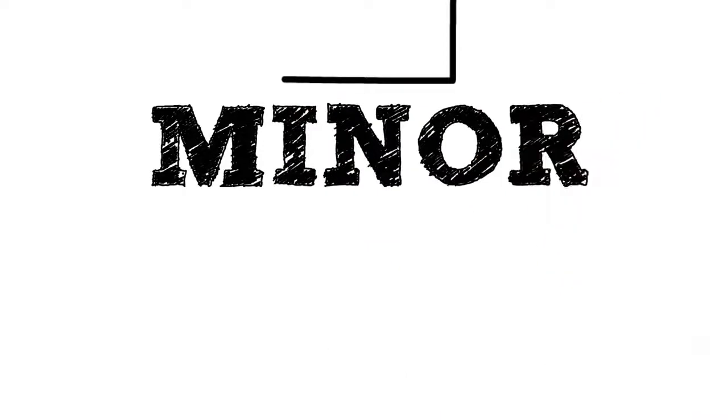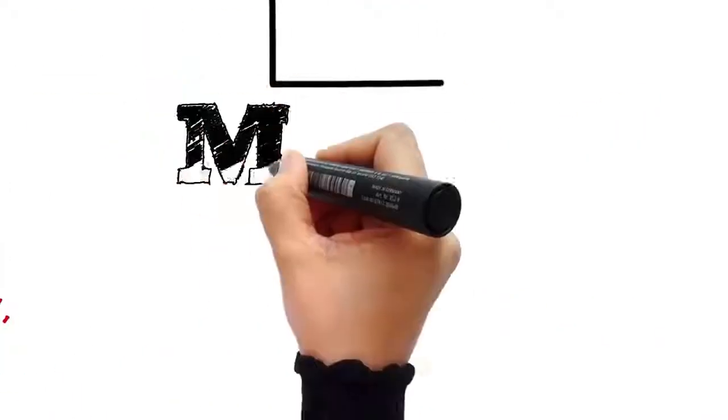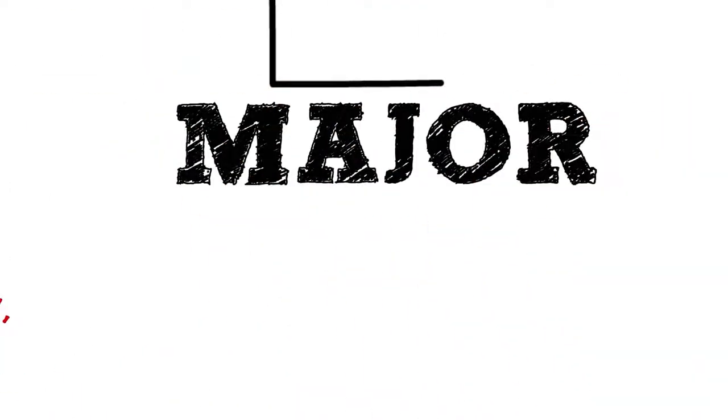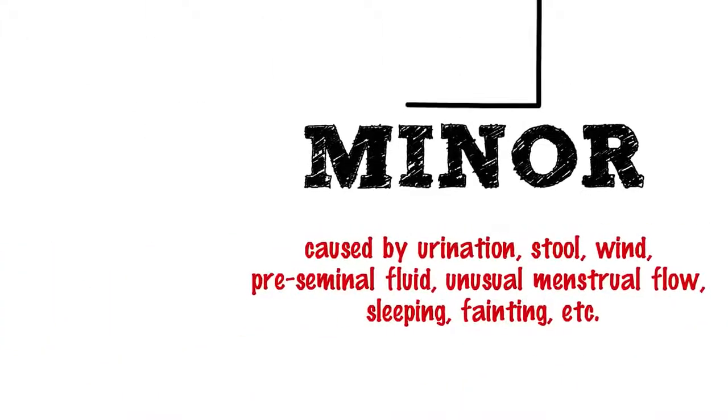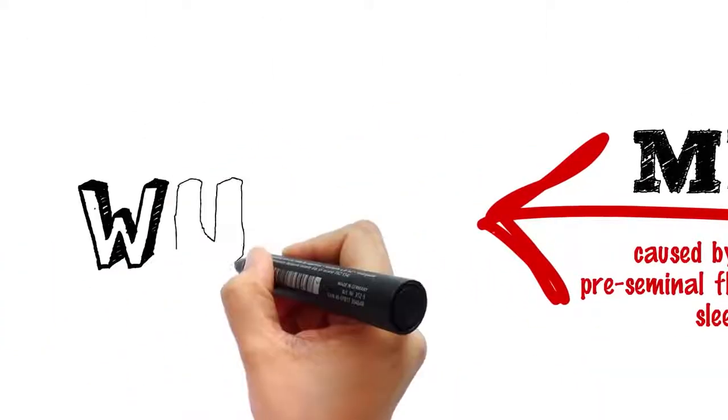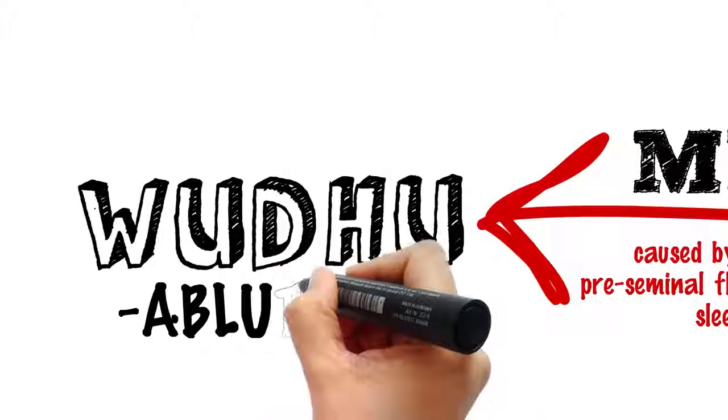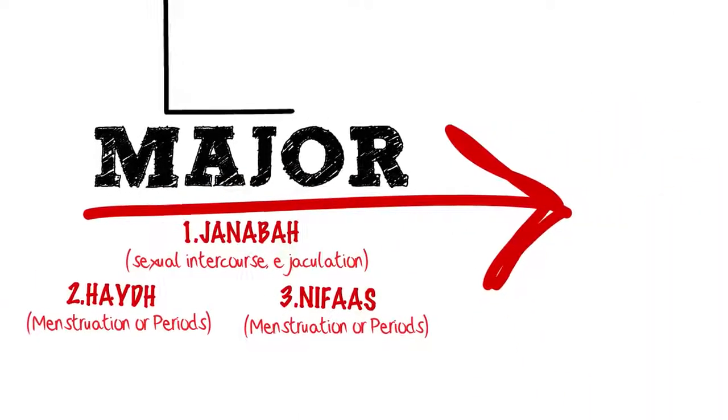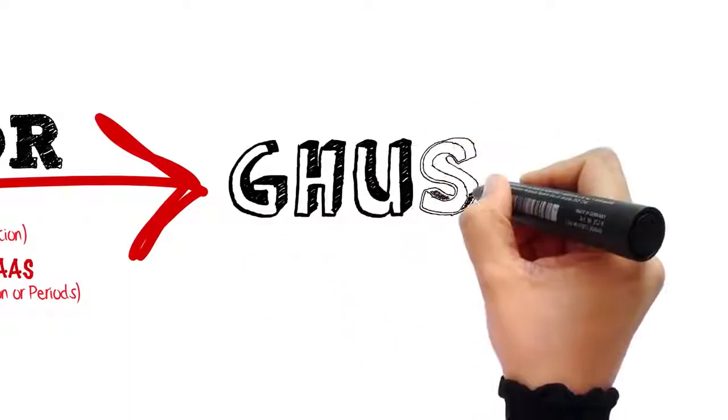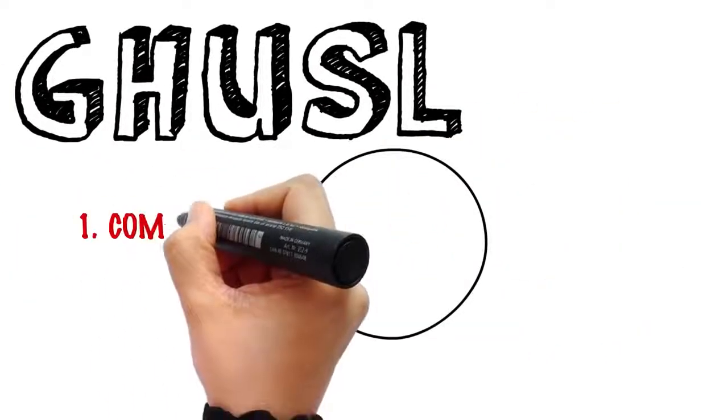So let's begin. There are two kinds of ritual impurities: the minor impurity and the major impurity, which occurs as a result of Janabah, Haid, or Nifas. To achieve Tahara from the minor impurity, you only need to renew your Wudhu, whereas in the case of major impurity, you need to take a Ghusl.